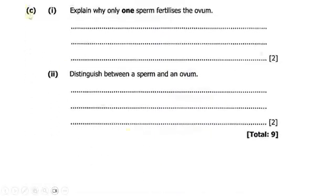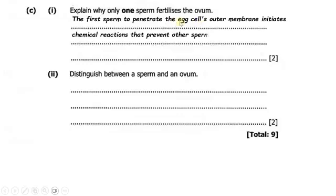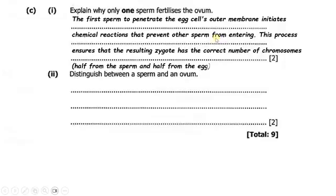Part C, number 1: explain why only one sperm fertilizes the ovum. The first sperm to penetrate the egg cell's outer membrane initiates chemical reactions that prevent other sperm from entering. This process ensures that the resulting zygote has the correct number of chromosomes.